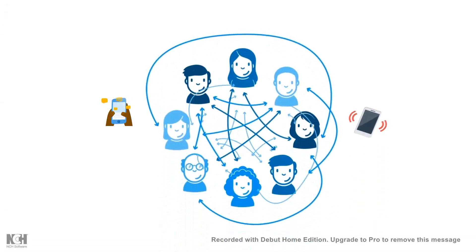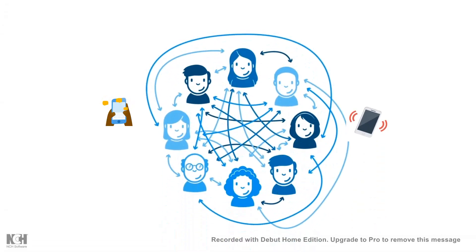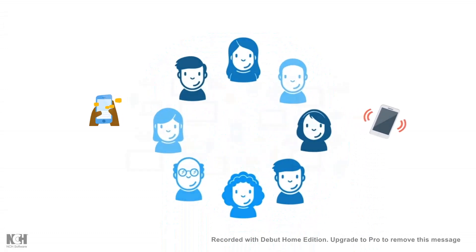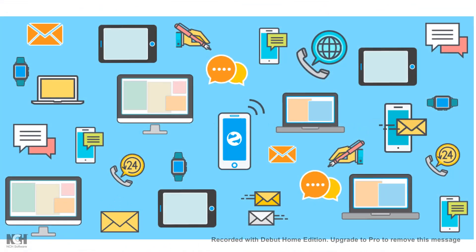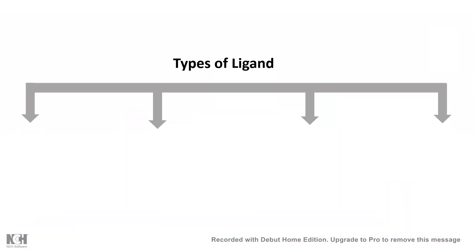We like to communicate with our friends and families via several multimedia — we use WhatsApp, Facebook, Twitter, email, etc. Cells also don't like to stay in isolation; they also want to talk to each other, and the way they talk is via cell signaling, which is based on receptor and ligand interaction.